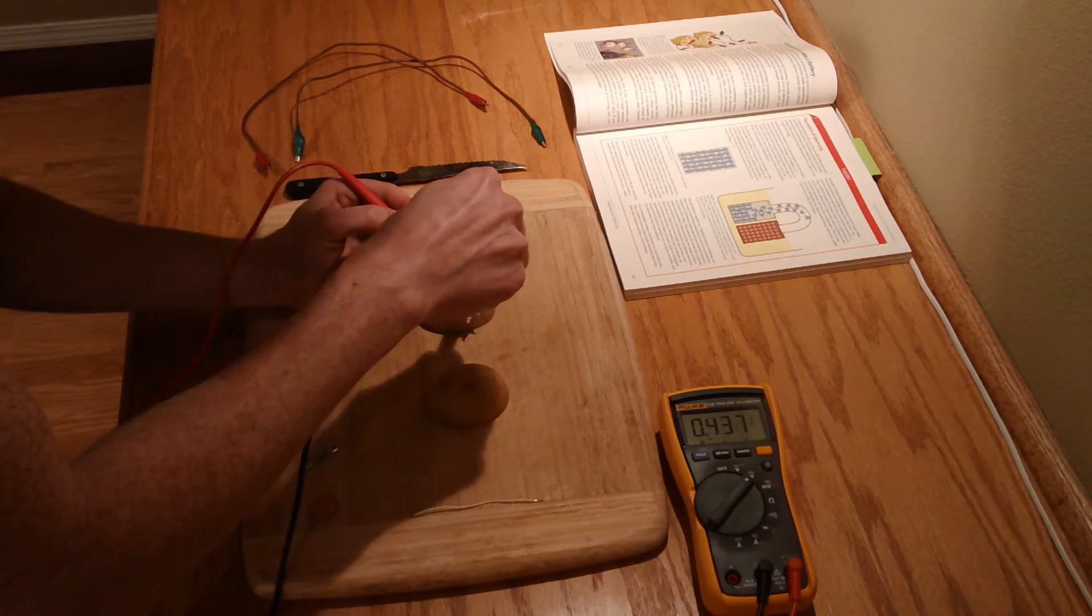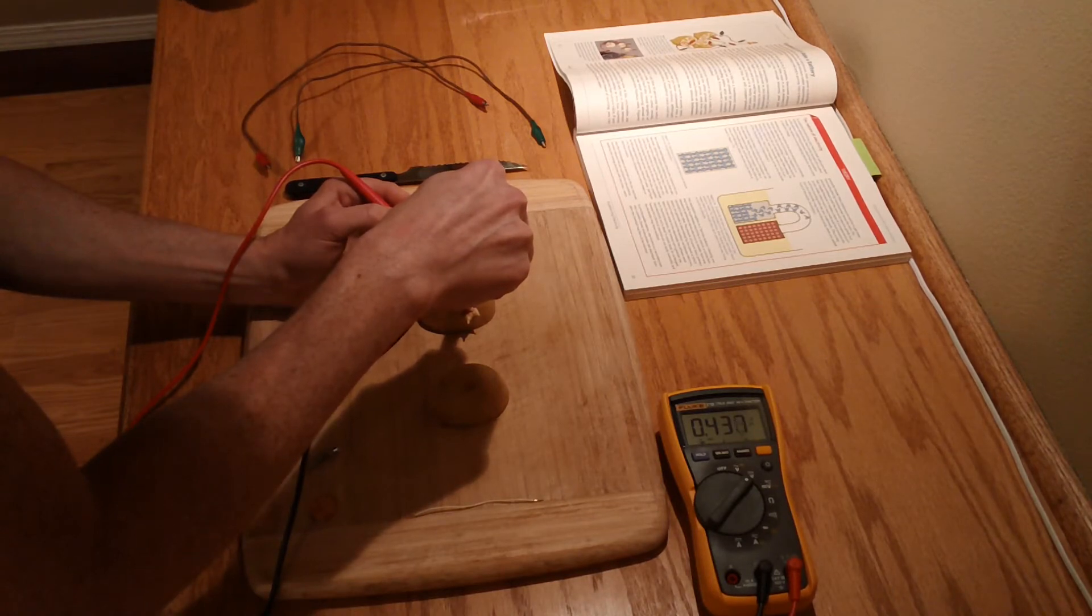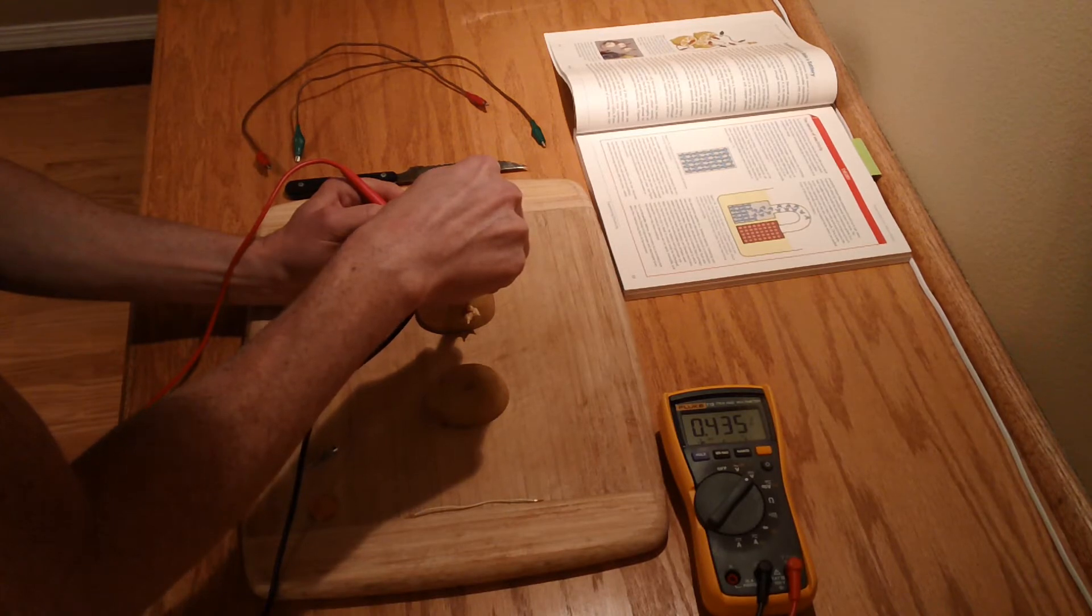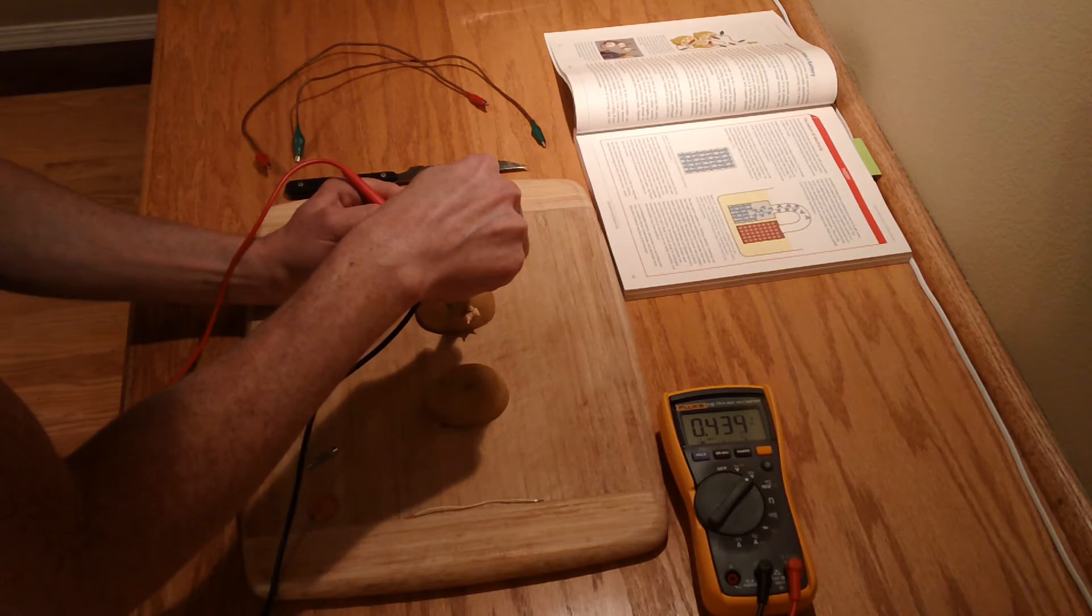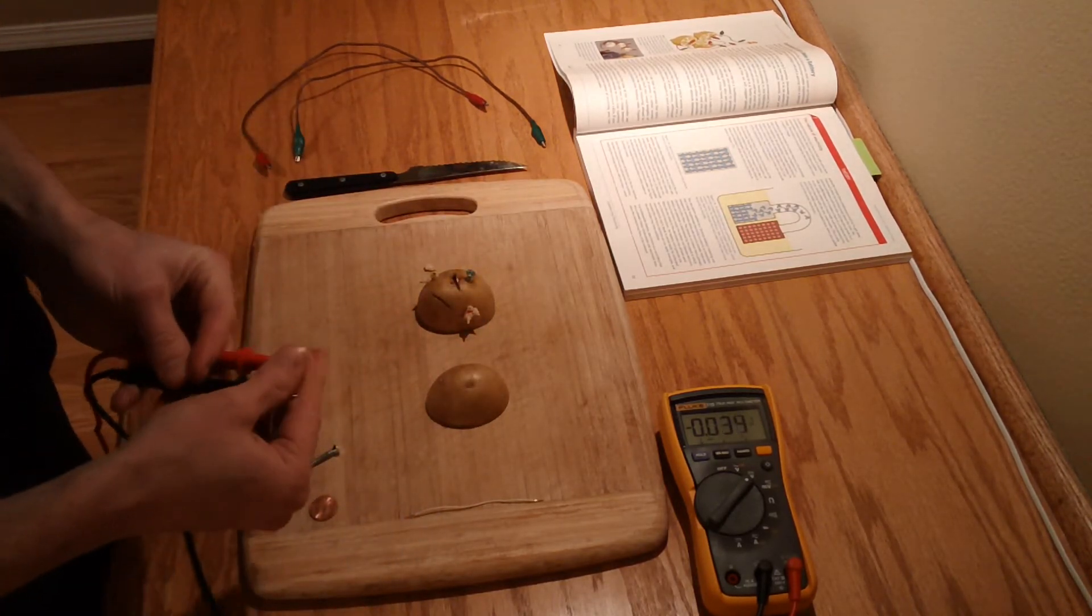So let's touch the copper. So we are getting 0.436 volts. That's 0.435. Yeah. Pretty cool. So that is almost half a volt.